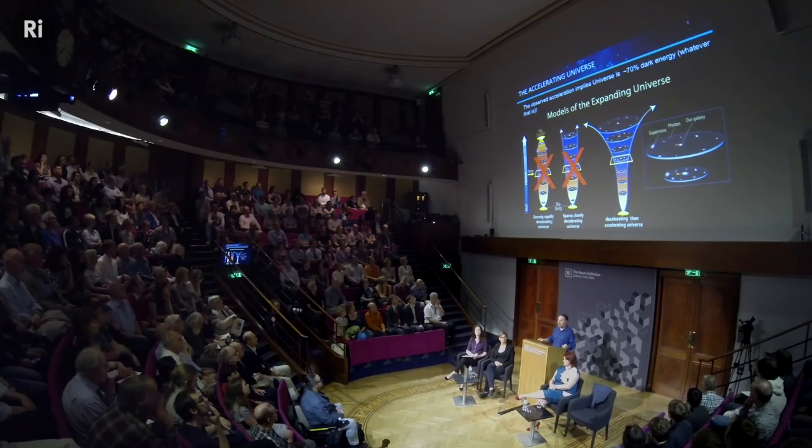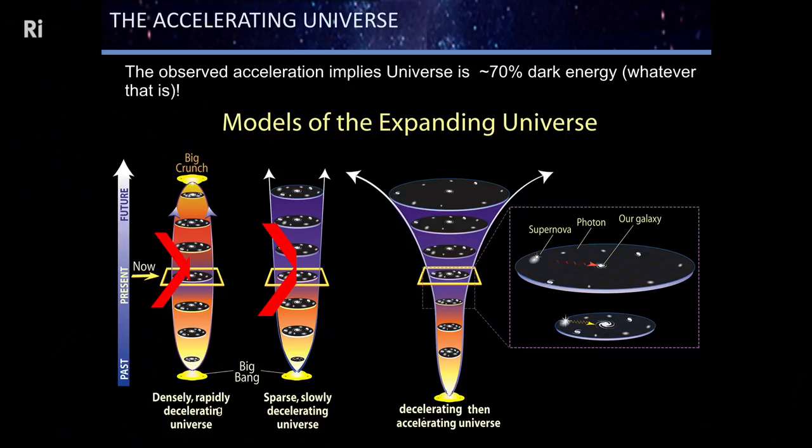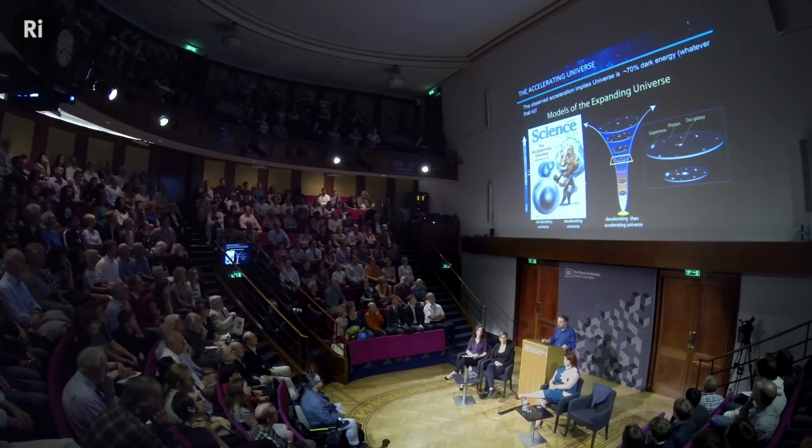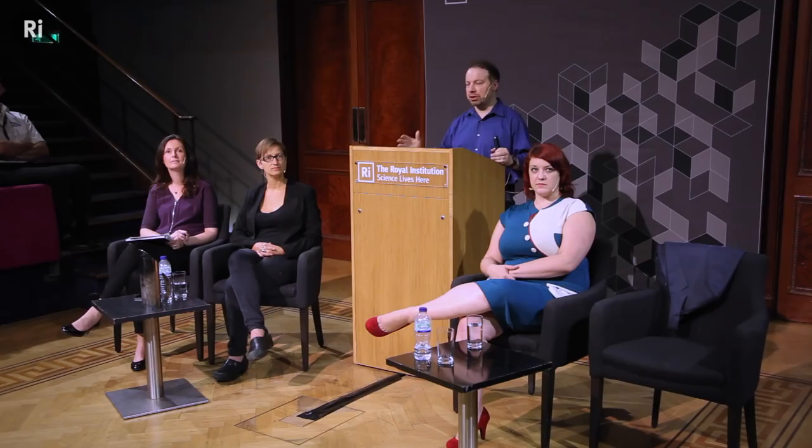When we did the measurement, it was neither the heavyweight universe nor the lightweight universe. The universe was doing something completely different—it wasn't decelerating at all, it was accelerating. It's like firing a rocket from the Earth and instead of falling back or escaping, it just keeps going faster and faster. This was acting opposite to attractive gravity, and we realized the universe really is accelerating. This was the breakthrough discovery of the year in Science Magazine in 1998.